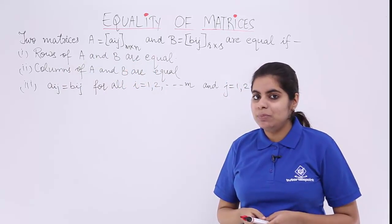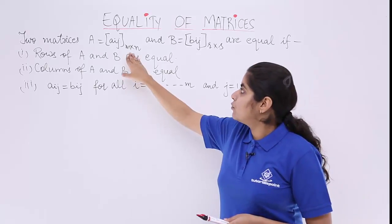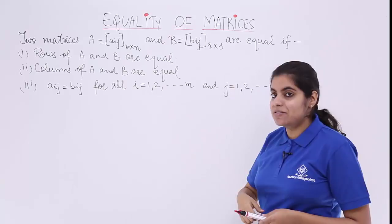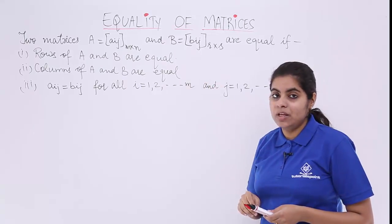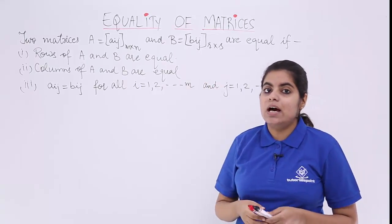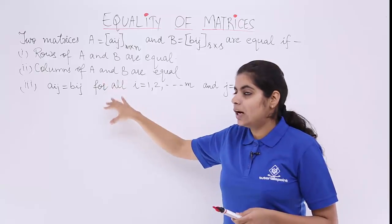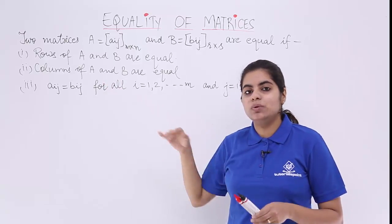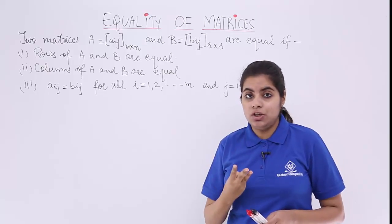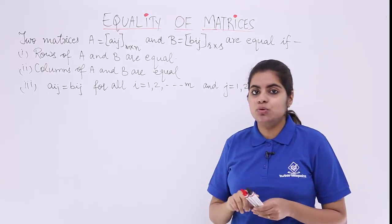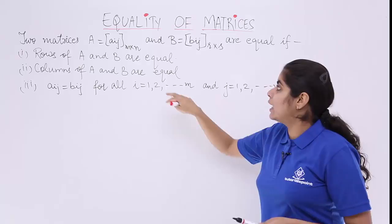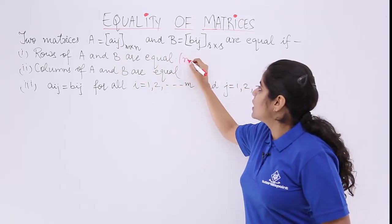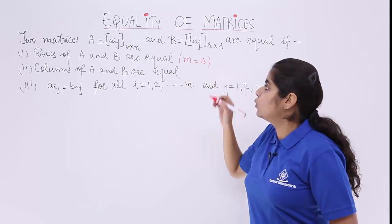Rows should be equal means what? The number of rows in matrix A are M, and the number of rows in matrix B are R. So if the rows are equal, although all the other two conditions should also be true — it is not that only one of these is true — all three should be true. That means the rows should be equal, meaning M is equal to R.